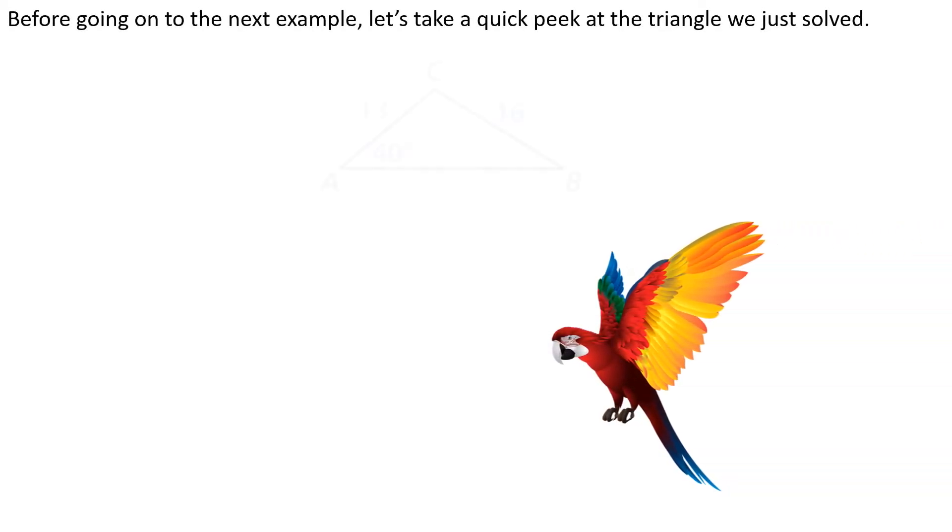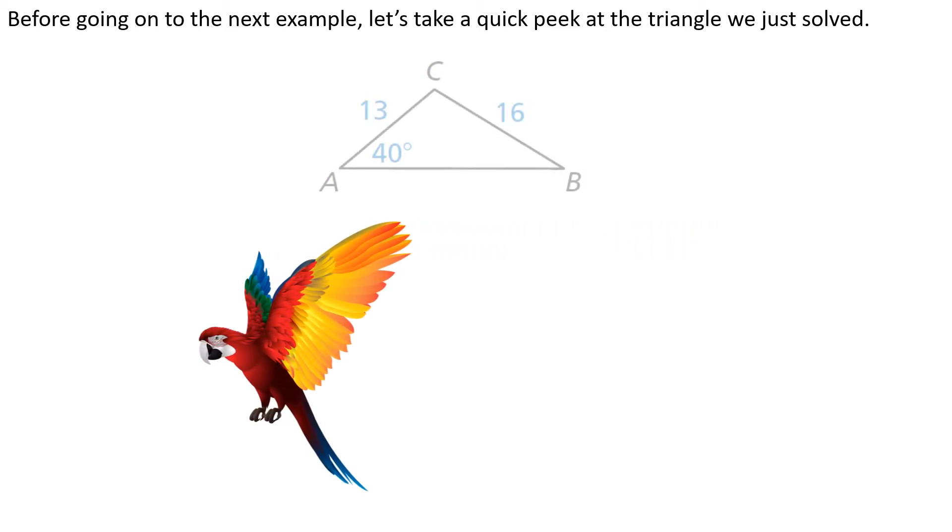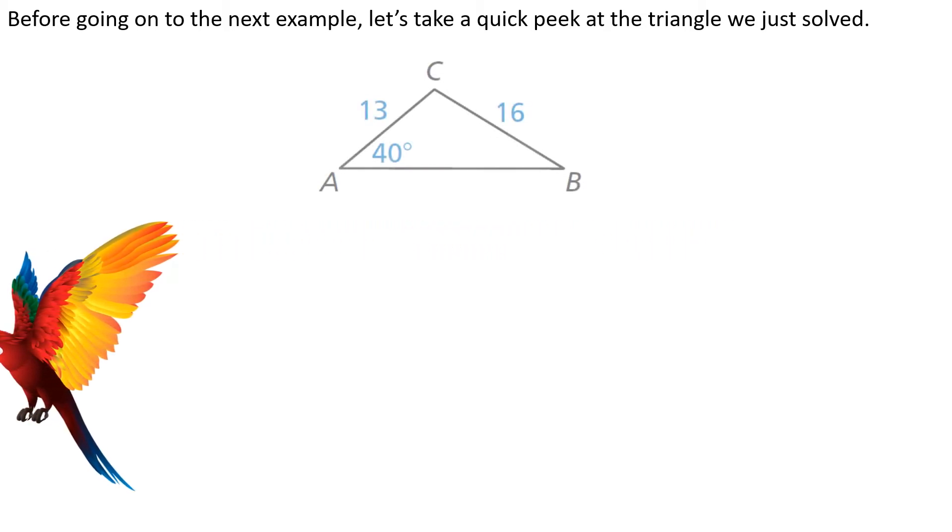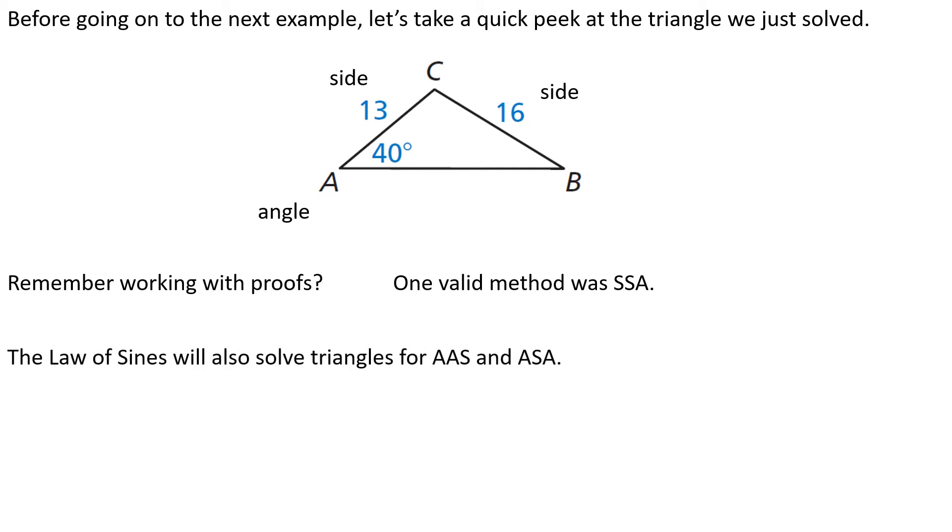Now, think back to when you were taking our good friend geometry and we were looking at our yummy, yummy proofs. What kind of proof could have been used with this triangle? Well, side, side, angle, right? I know a side 16. I know a side 13. And I know the angle is 40 degrees. The law of signs will also work with angle, angle, side, and angle, side, angle.